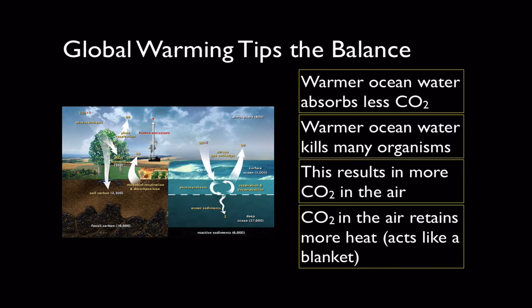Also the warmer ocean water may kill lots of different organisms that can't live in the higher temperatures. So the net result is we get more carbon dioxide in the atmosphere as the atmosphere warms up. The bad part about this is carbon dioxide in the atmosphere retains more heat. It acts like an atmospheric blanket and traps more heat closer to the ground. So we get this vicious cycle of carbon dioxide accelerating the warming of our atmosphere.